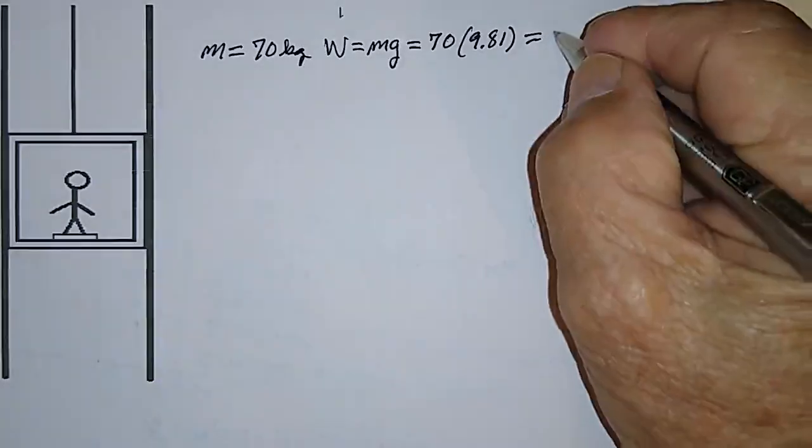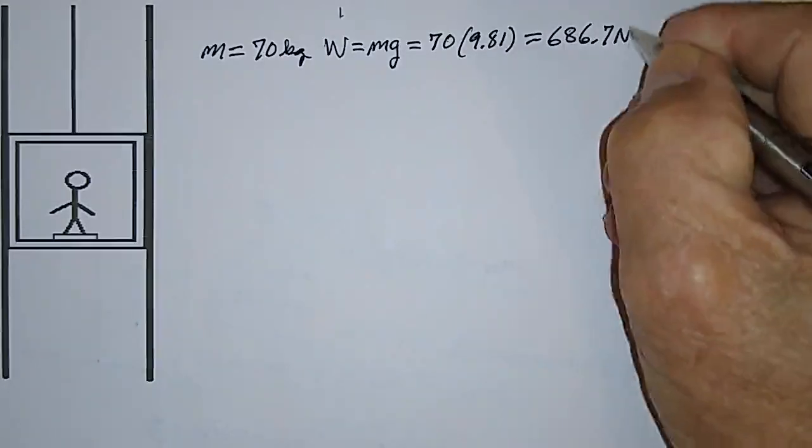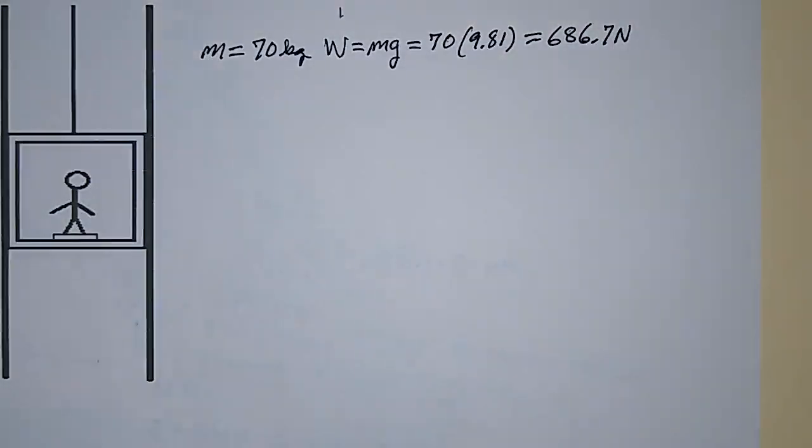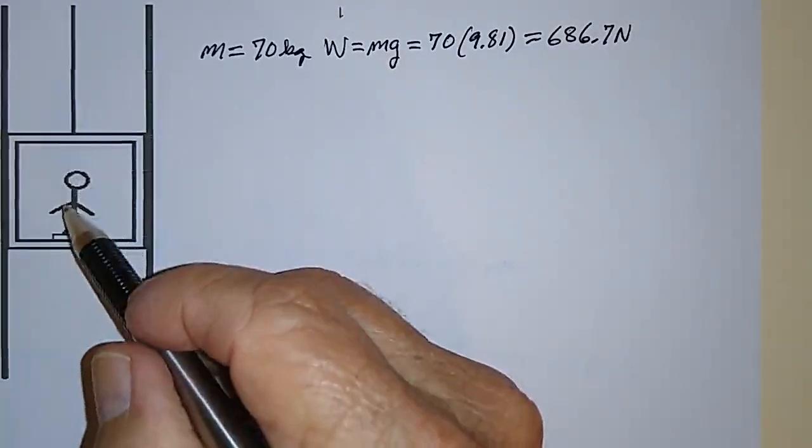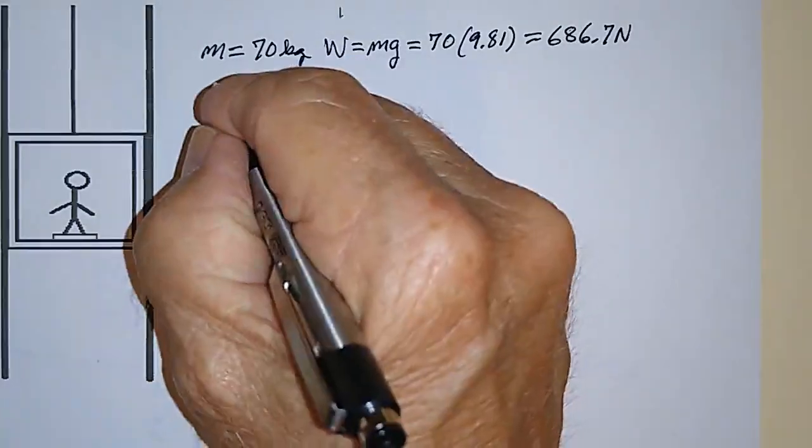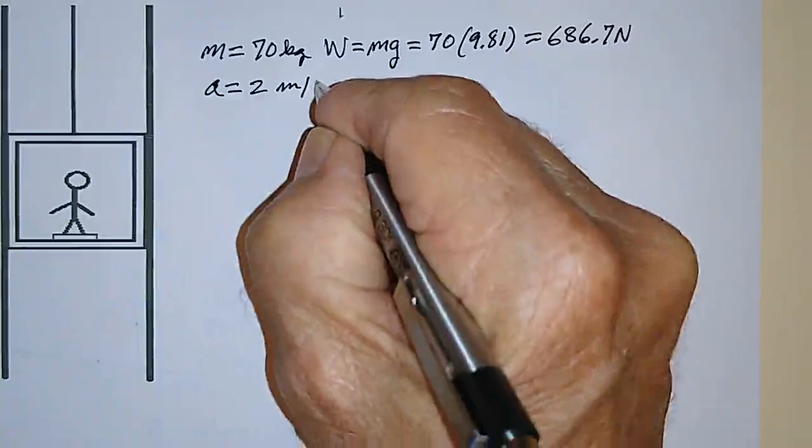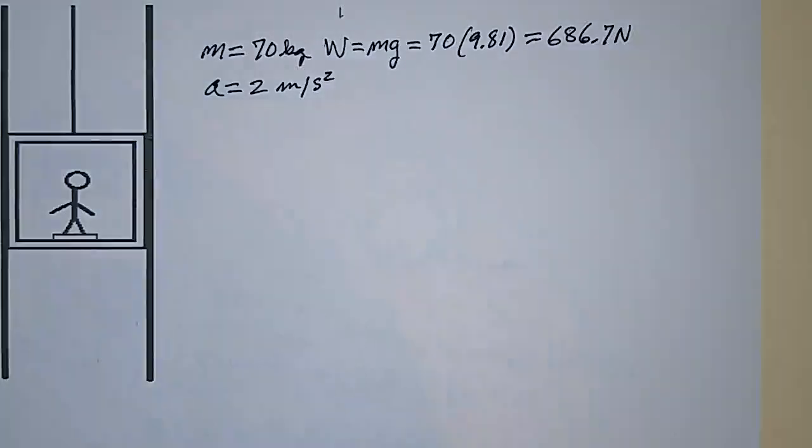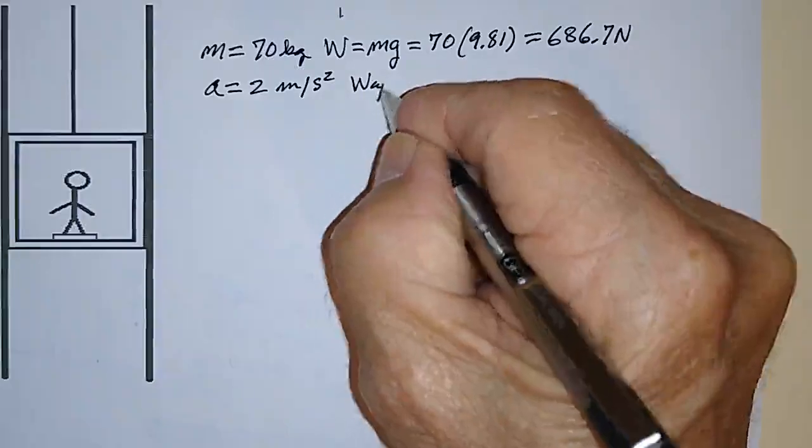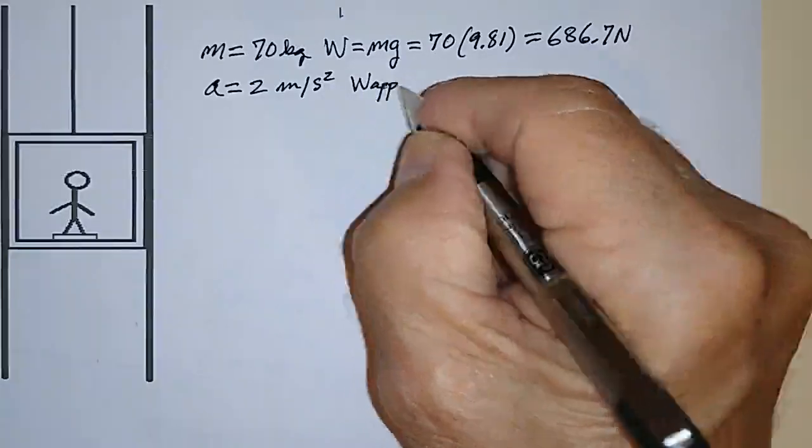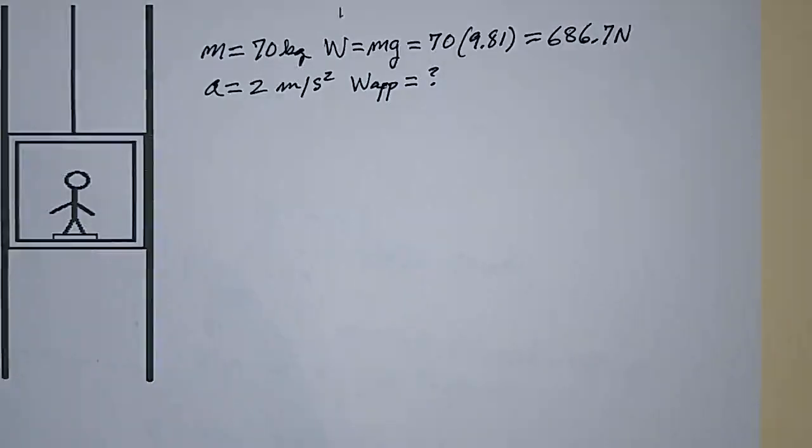686.7 Newtons like that. And what we want to know is if all of a sudden you start accelerating downward at 2 meters per second squared, what is his apparent weight? What is the reading on the scale if he's accelerating downward at 2 meters per second squared?